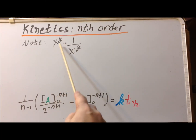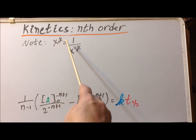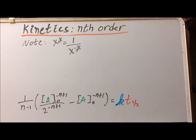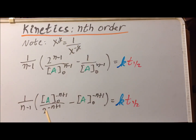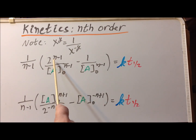We make a note that I can write x to the y power as 1 over x to the minus y power. So we can move expressions involving exponents from the numerator into the denominator so long as we multiply the exponent by minus 1. Now, making use of this property, I can convert A sub 0 to the minus n plus 1 power to A sub 0 to the n minus 1 power in the denominator, because if I multiply minus n plus 1 by minus 1, I get n minus 1. Similarly, I can move 2 to the minus n plus 1 to the numerator as 2 to the n minus 1, again using the trick that minus n plus 1 times minus 1 gives n minus 1. So we get this particular expression, which will be easier to simplify.